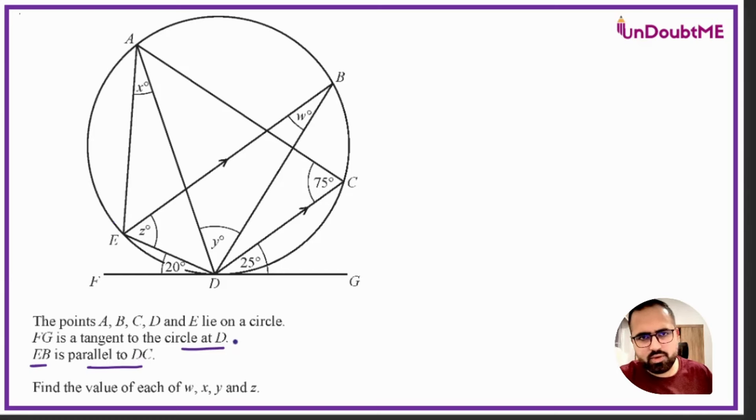We can start with some circle theorem. If you look at this angle, we have an alternate segment with this, and with that we can get w. So w is actually equal to 20 degrees. Now if you look at w and x, they both lie in the same segment, so x is equal to w is equal to 20.